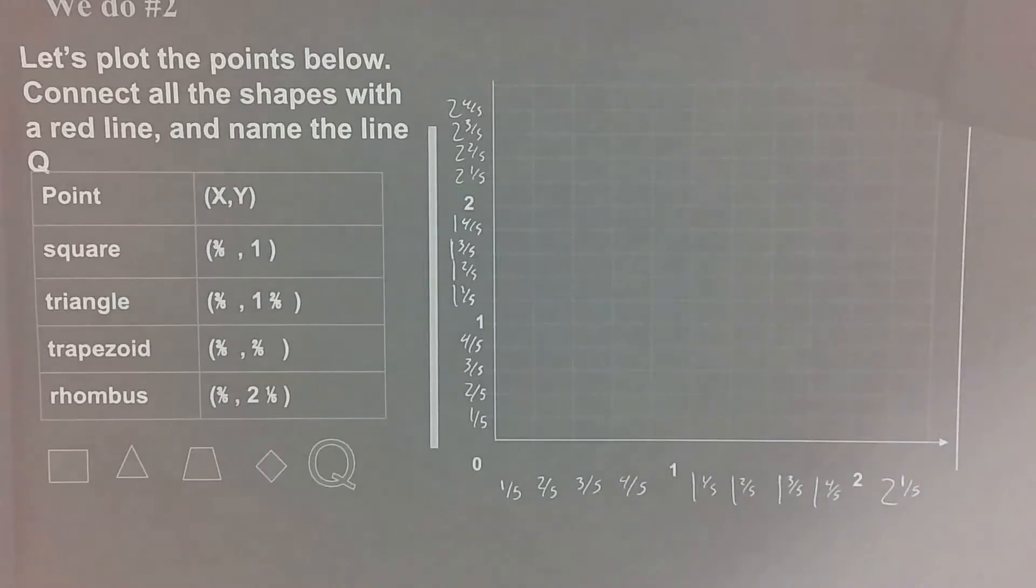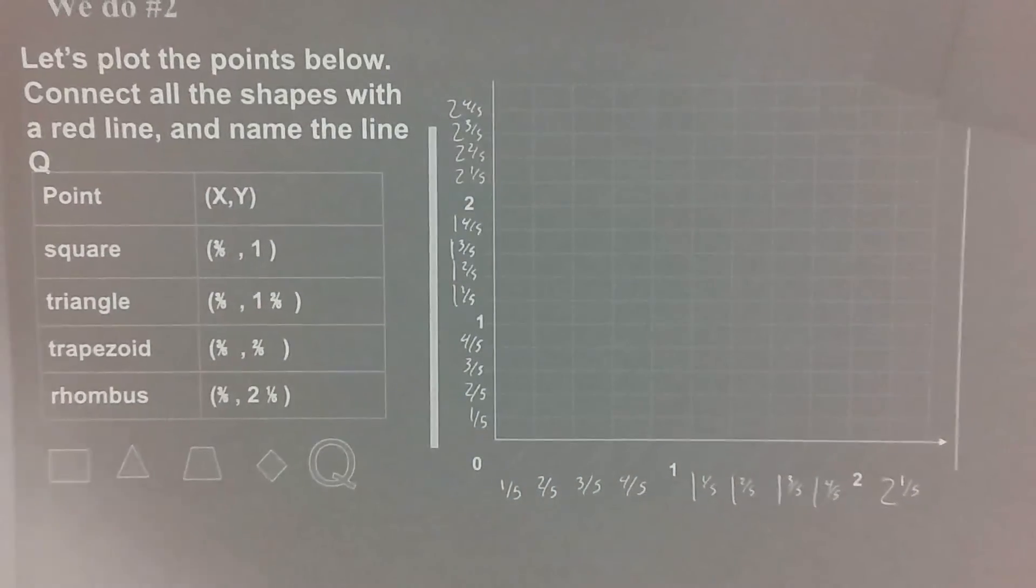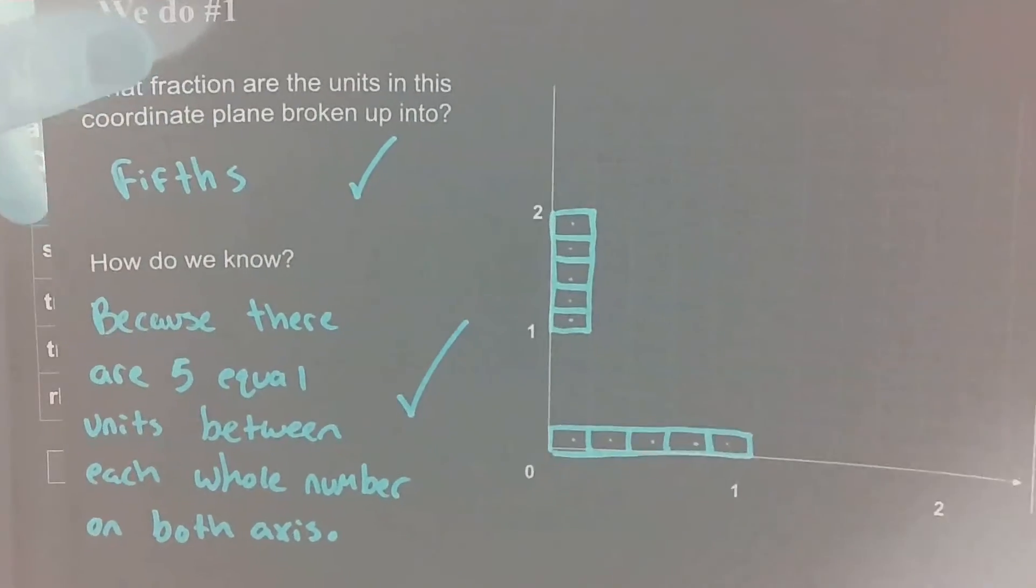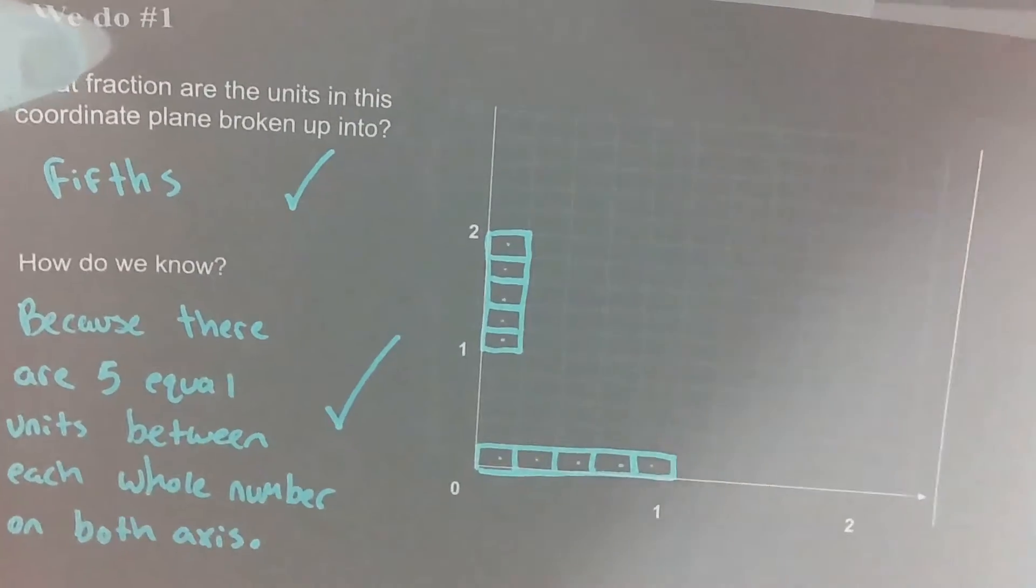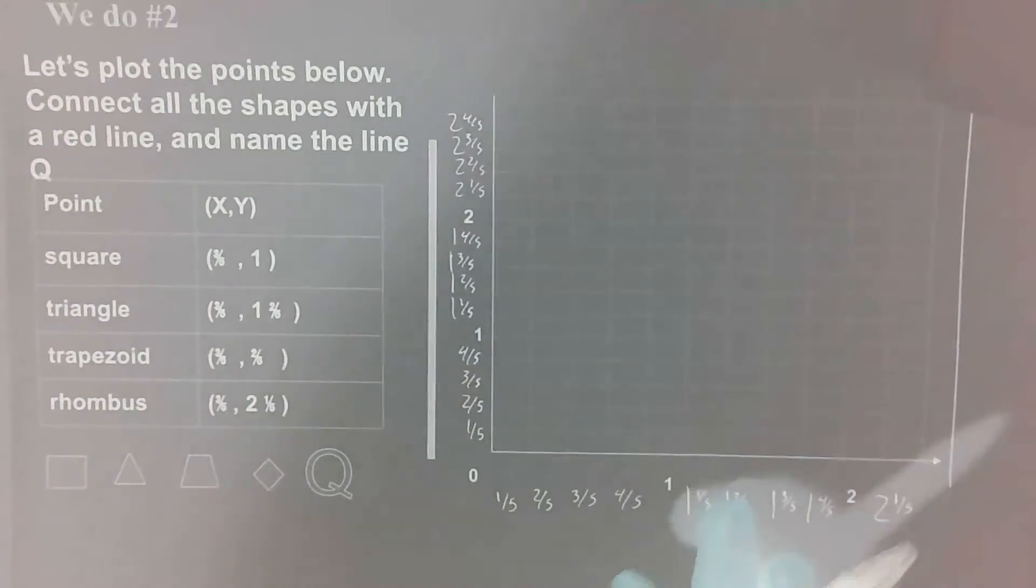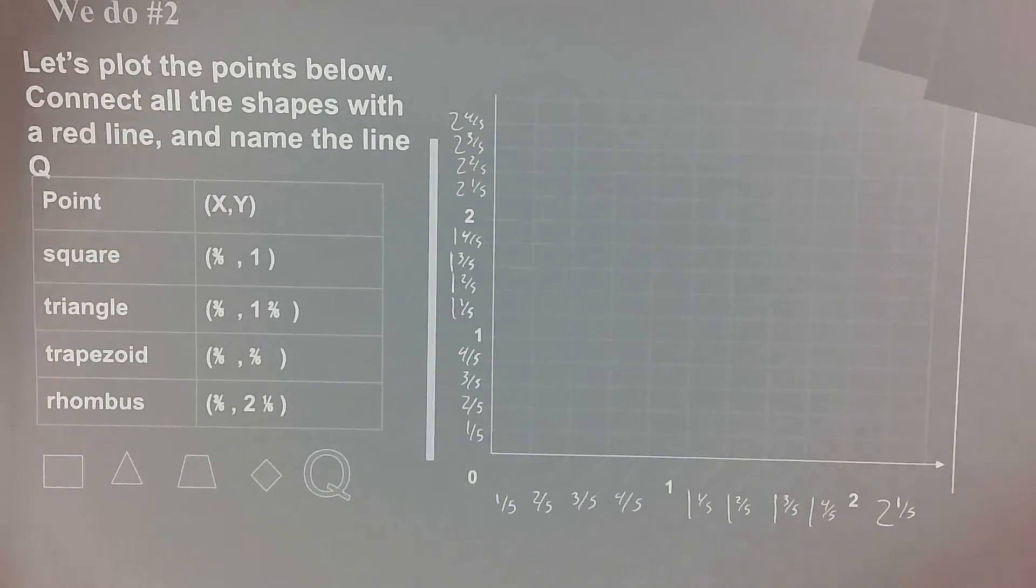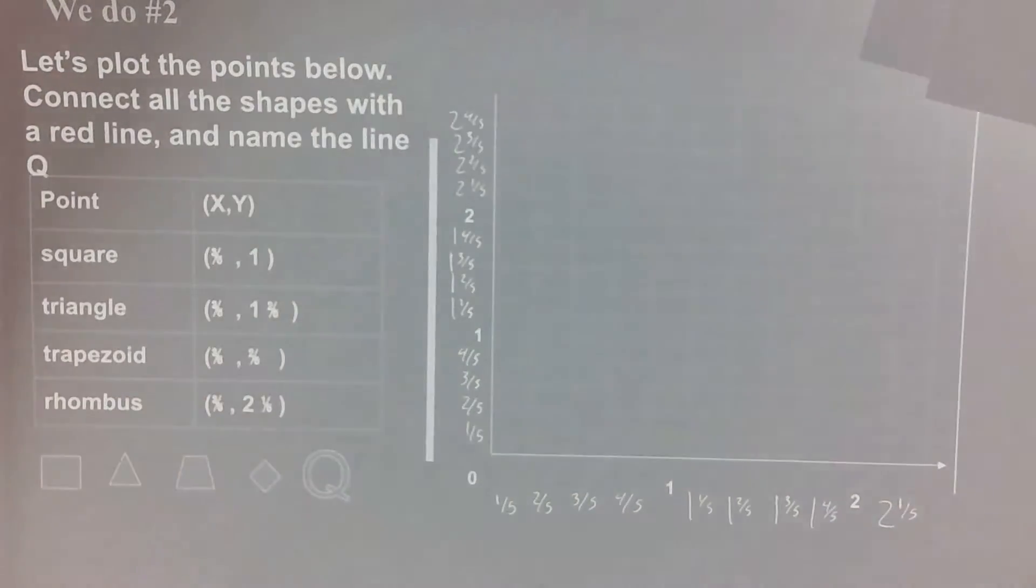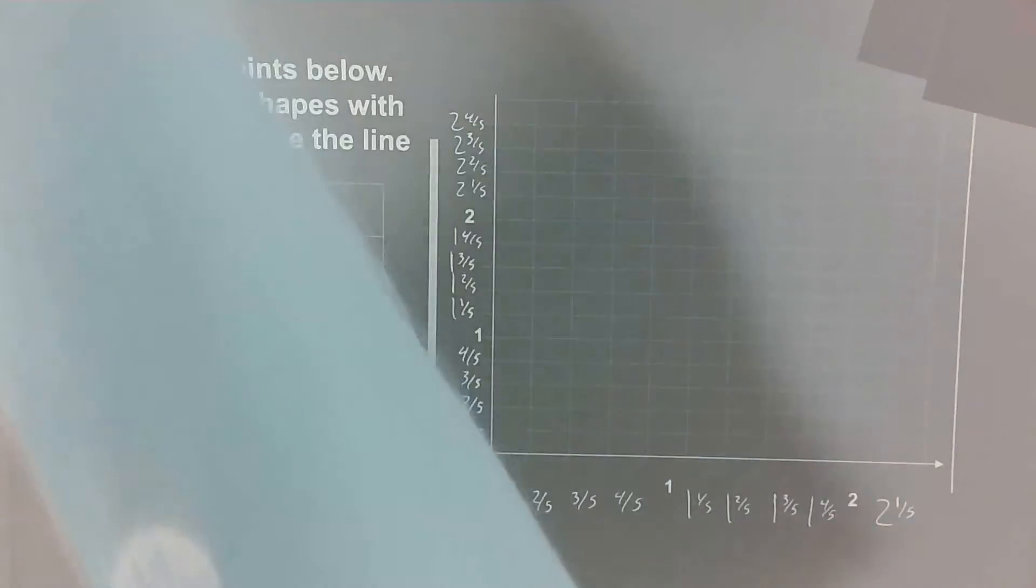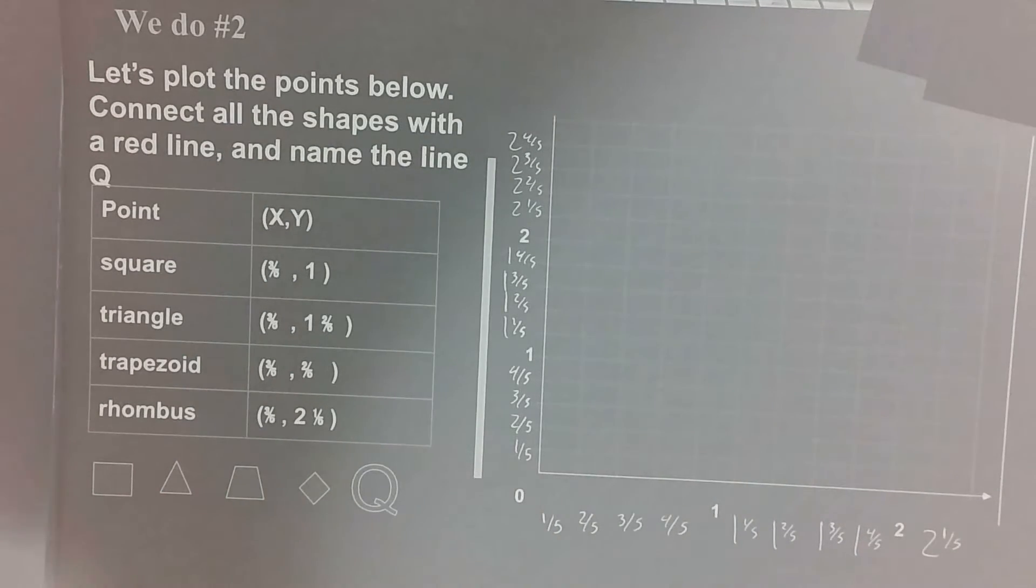On we do number two, we have an identical coordinate plane to the coordinate plane from we do number one, which we determined was partitioned, broken up into fifths. So I've gone ahead and labeled all the fifths so you can see what each point on each axis would be. And the denominators are all fifths. We're going to plot some points just like we did yesterday. These points are going to create a line, and then we'll talk about coordinate units and coordinate distance, our key terms from earlier.